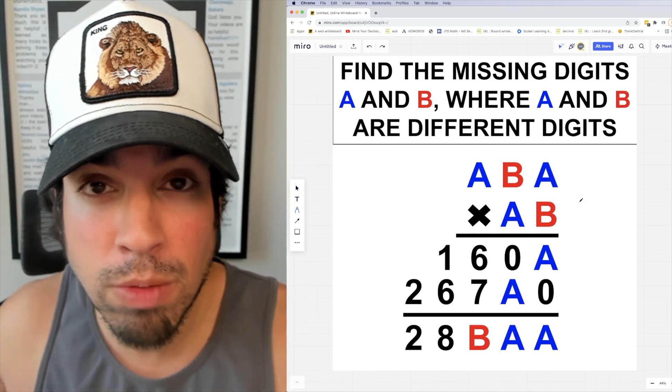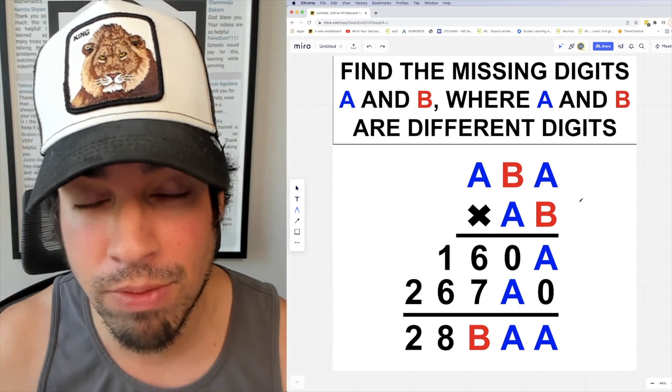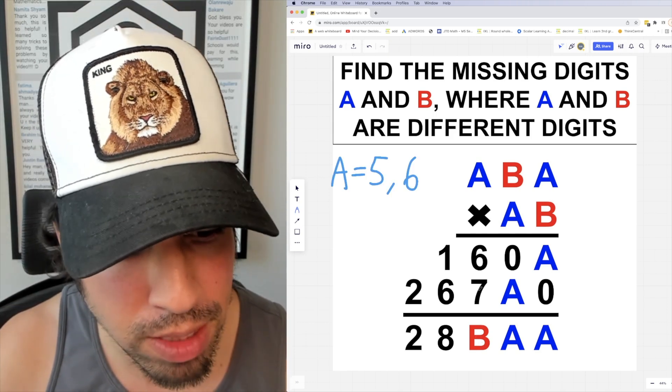The only two numbers where you multiply against themselves and end in themselves is five and six, because five times five is 25, six times six is 36. Now also, down here we have another clue about B. If you check it out, it says six plus seven equals B.